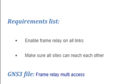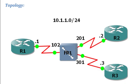In this hub-and-spoke network we would have to make sure that subnet 10.1.1.0/24 is shared by the three routers. We also have to make sure that Router 2 and Router 3 can reach each other. So let's get started.